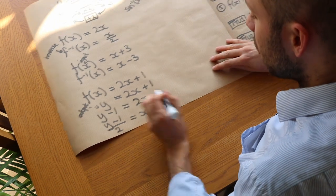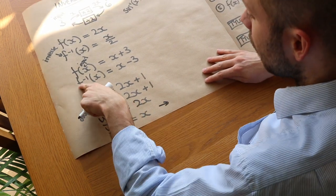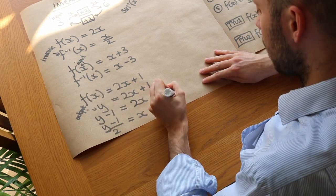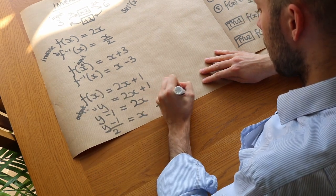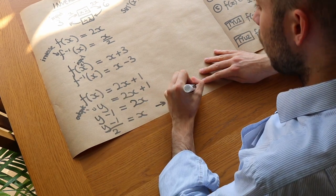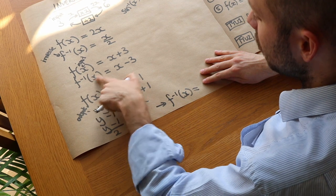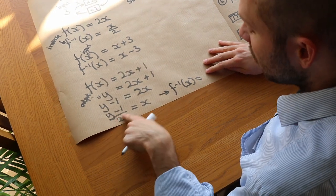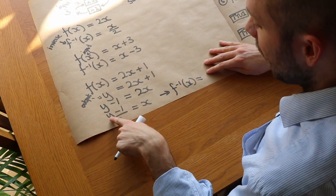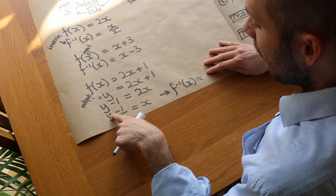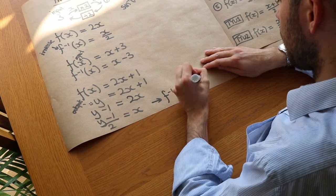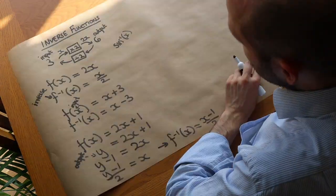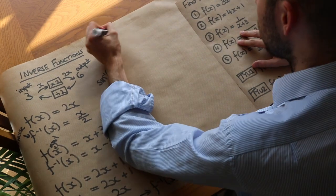We need to use proper notation here. Note that we write f⁻¹(x), and functions are usually expressed in terms of x. So we replace the y back with x, giving f⁻¹(x) = (x − 1)/2. There are a lot of steps there so let's do a few more examples.